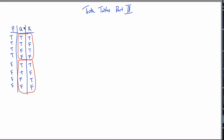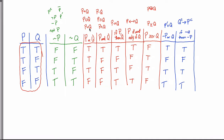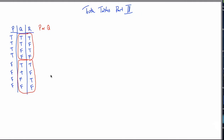Now that I have these three different propositions, I can combine any of the three together using the different operations from the previous videos. For example, I could say P or Q. As we saw in the second video, this can be written different ways — it all means P or Q. P or Q was asking you to look at the P's and Q's and ask: is there at least one T? Now going into this new video, P or Q doesn't reference R, so I'm never even going to look at that column. I'm just looking at P and Q and asking: do I see at least one T in these two columns?